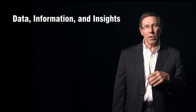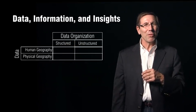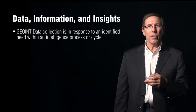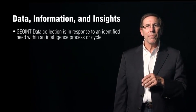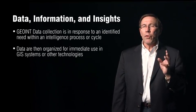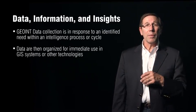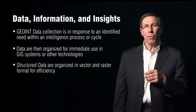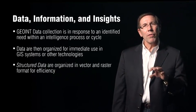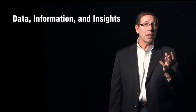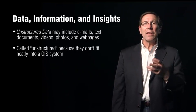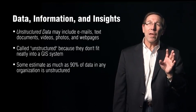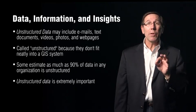Let's talk about GEOINT data in terms of its content and organization. The table to my right illustrates the general types of data and the relationship between them. GEOINT data is typically in response to an identified need within the intelligence cycle — we'll talk much more about that in lesson three. The data is organized for use in a geographic information system, typically in two structured forms we'll discuss later called raster and vector format. However, there are also unstructured data types — email, text, documents, videos, photos, web pages — things not easy to get into computers. Just because they're unstructured does not mean they're not useful; some say 90% of the data an organization uses is unstructured, and it is some of the most important data.